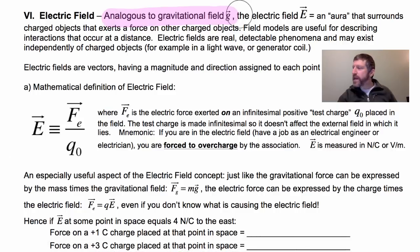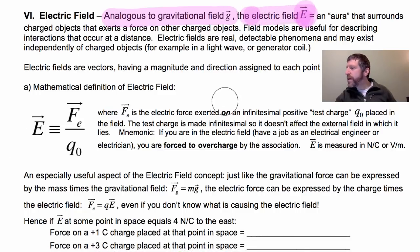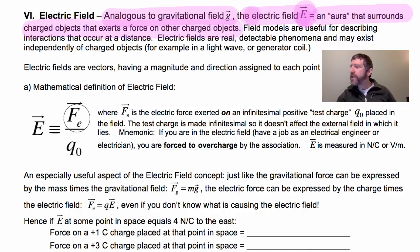The electric field, which we use the symbol E for, is just an aura that surrounds charged objects and exerts a force on other charged objects.